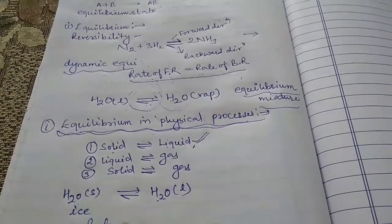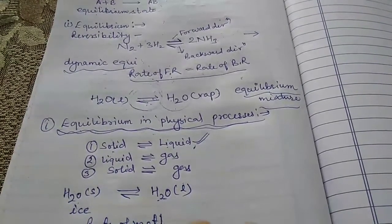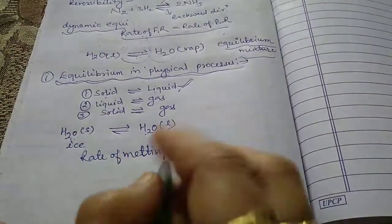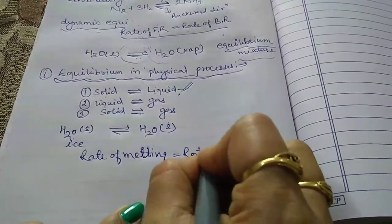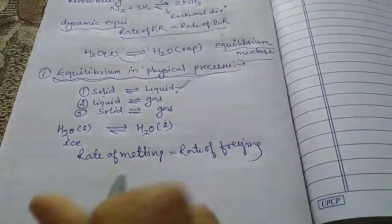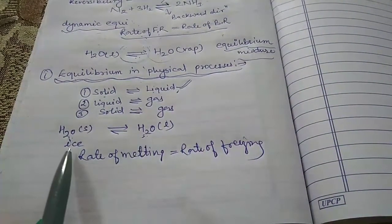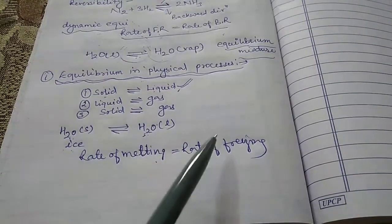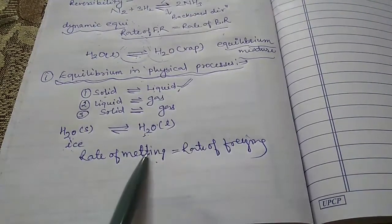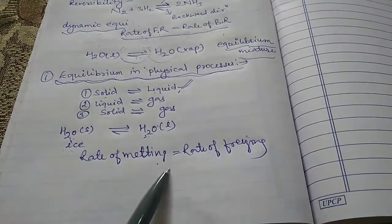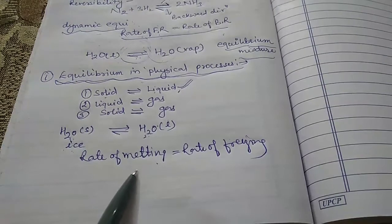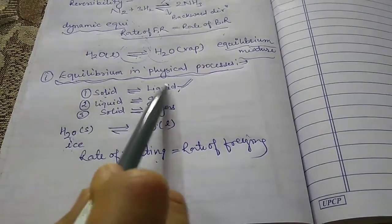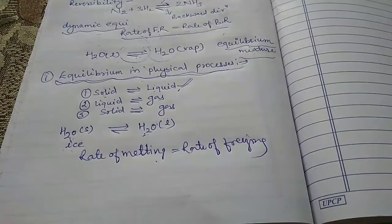The rate of melting — H2O in solid form converting to H2O in liquid form — is equal to the rate of freezing — H2O in liquid form converting to H2O in solid form. Both rates are equal. The temperature at which the solid and liquid phases are at equilibrium at atmospheric pressure is known as the normal freezing point or melting point of the substance. This is all about solid-liquid equilibrium.